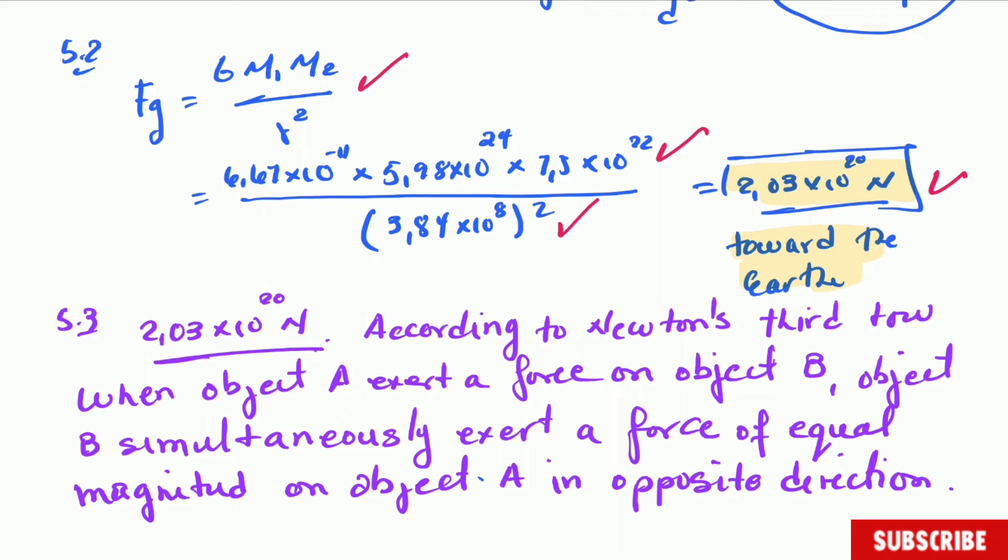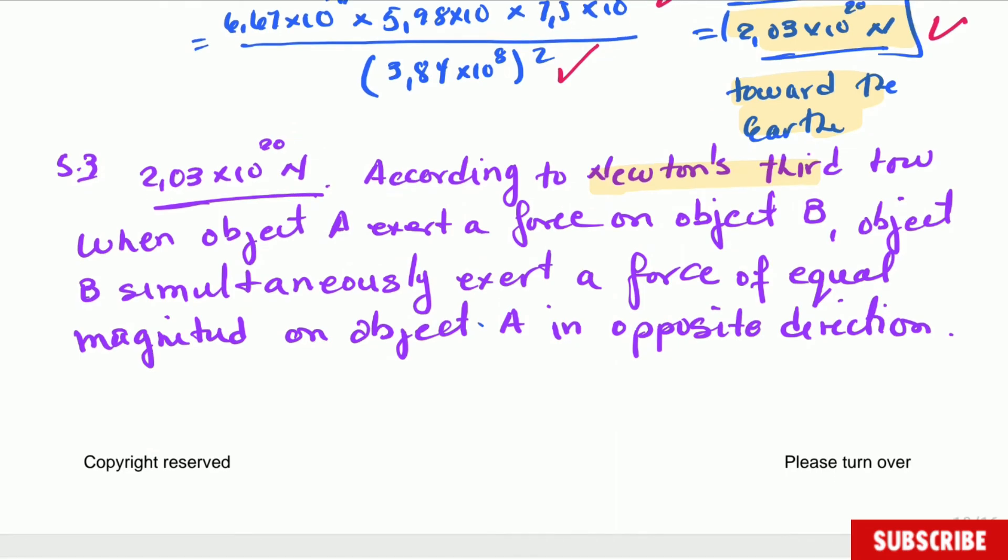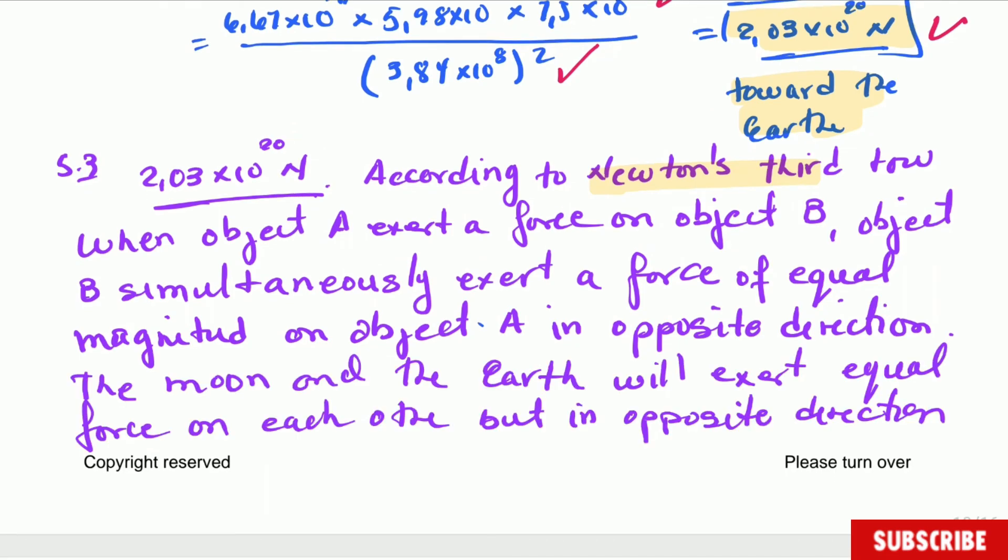And then they say explain. So the first thing we have to say is according to Newton's third law, that is quite important to mention Newton's third law because it's the law that is going to help us to explain this one. When object A exerts a force on object B, object B simultaneously exerts a force of equal magnitude on object A in opposite direction. Now we have to take this one to the moon and the earth. The moon and the earth will exert equal force on each other, but in opposite direction. For saying the magnitude is another mark.